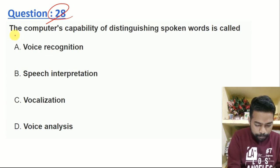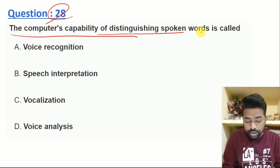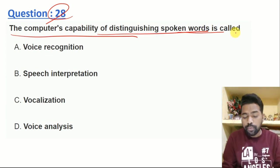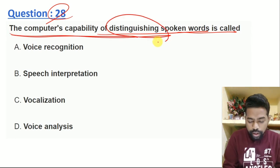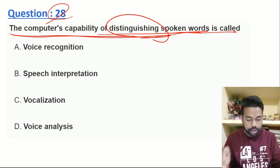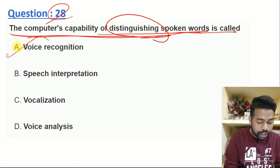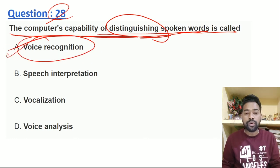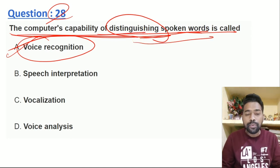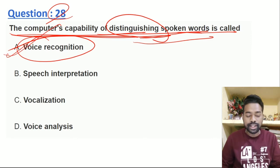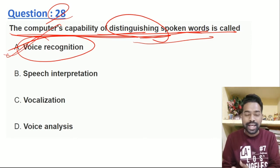The sentence is: the capability of distinguishing spoken words is called voice recognition. This is called distinguishing spoken words. We can receive voice — the answer is voice recognition. Who is the voice recognition? The computer uses voice recognition. How many answers can use to the computer? As you can use to the laptop.